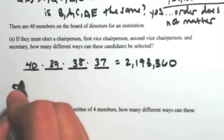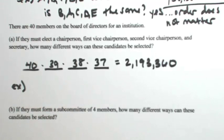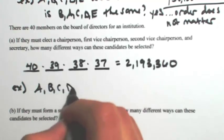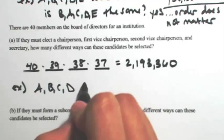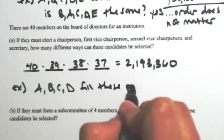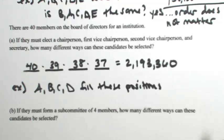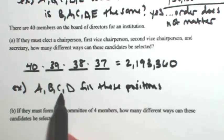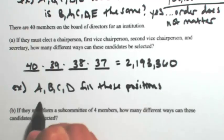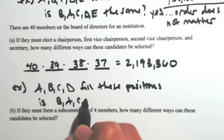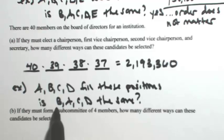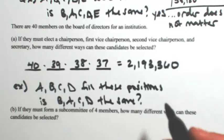And we get 2,193,360 ways to do this. So then the big question you always need to ask yourself when you're doing problems like this is, let's say A, B, C, and D fill these positions. So that means that A is the chairperson, B is the first vice chairperson, C is the second, and D is the secretary. So is, let me switch the first two, B, A, C, D the same? So if B is the chairperson and A is the first vice chairperson, is that the same? No, it's not.